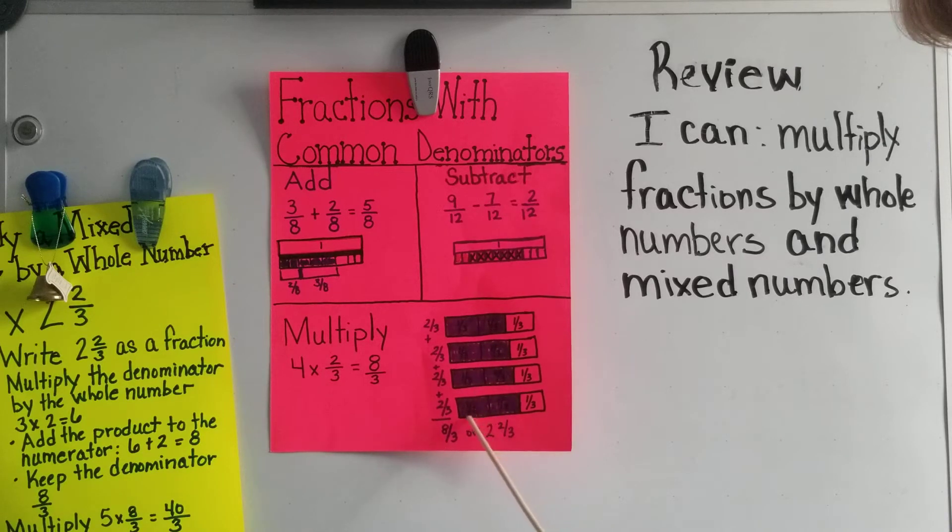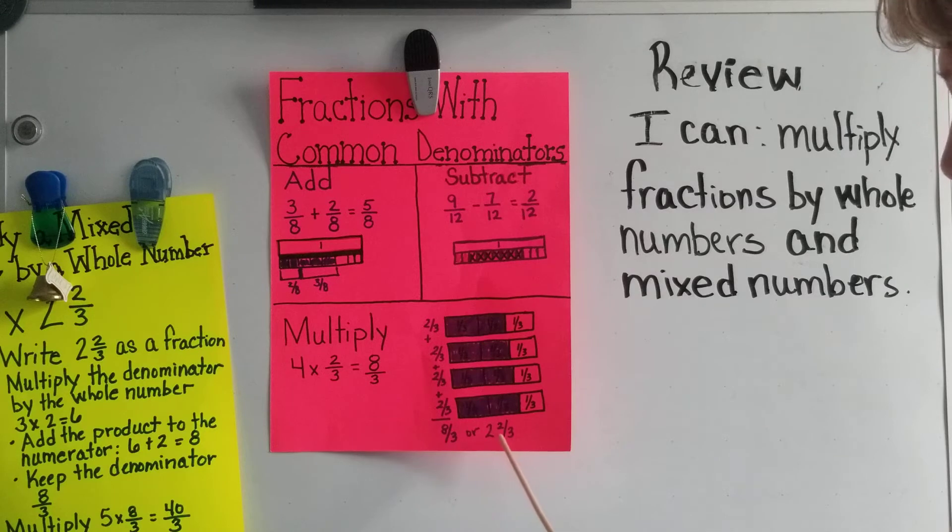Six-thirds, seven-thirds, eight-thirds. So four times two-thirds equals eight-thirds, or we can rename it to be two and two-thirds.